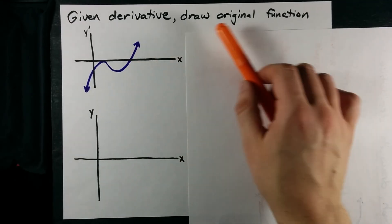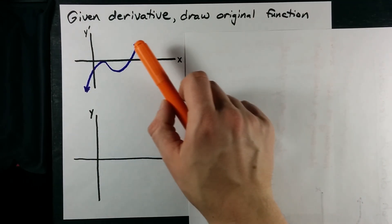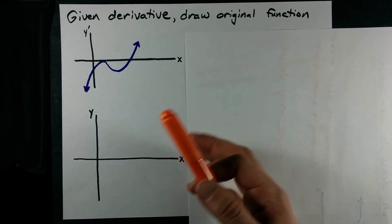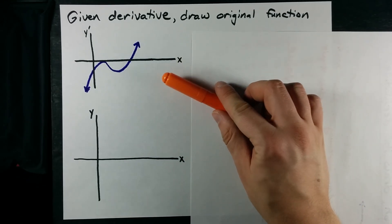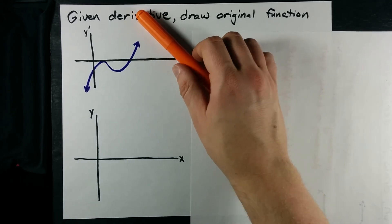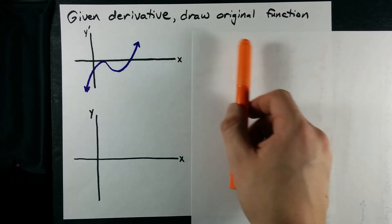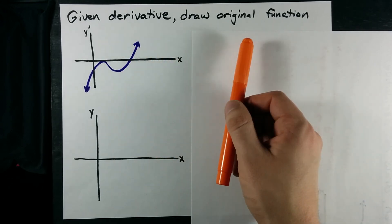Can you draw the original function if I give you the graph of the derivative? The answer after this video will be yes. Now, if you know how to draw the derivative from the original function, this should be easy because it's the exact reverse process.